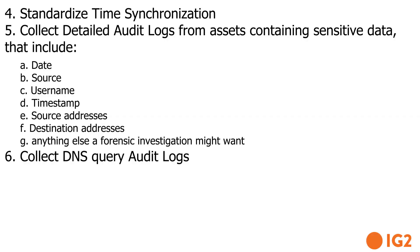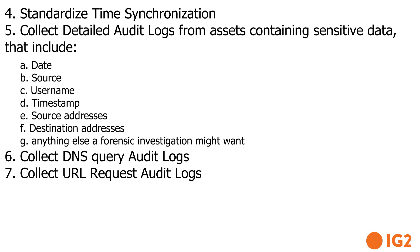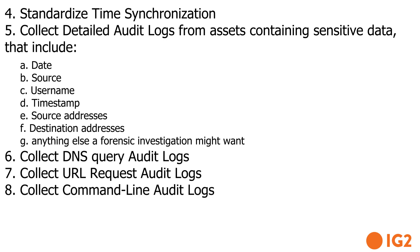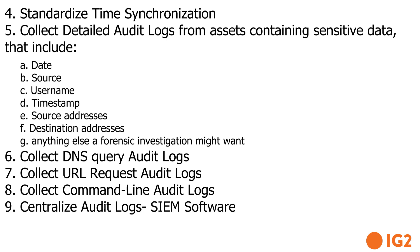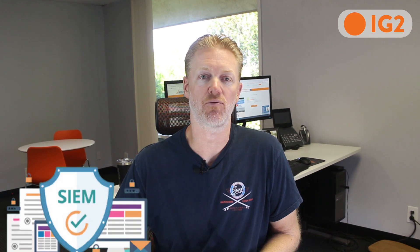Step six: collect DNS query audit logs. Step seven: collect URL request audit logs. Step eight: collect command line audit logs. Step nine: centralize the audit logs. With all these different audit logs coming in, you don't want to be checking disparate sources — you want to centralize them with some type of software, most commonly SIM software.